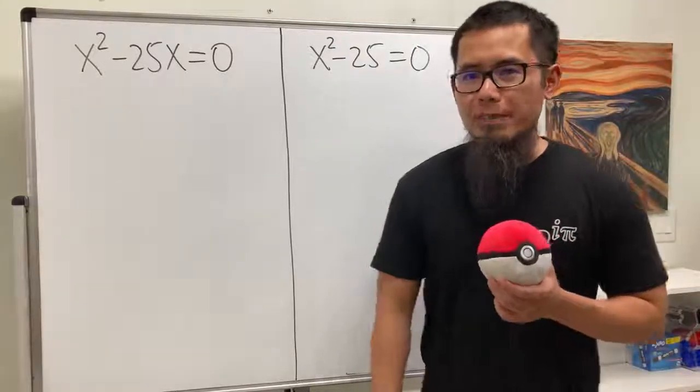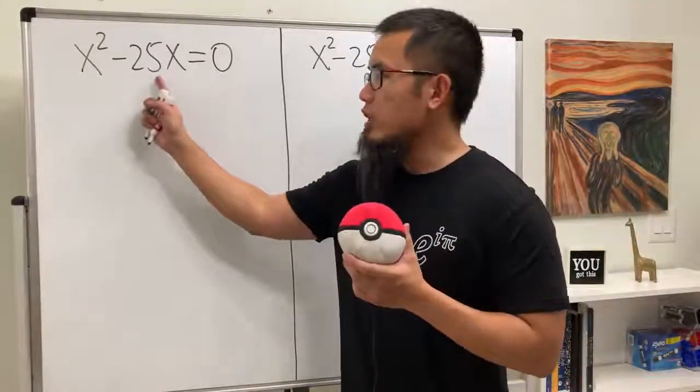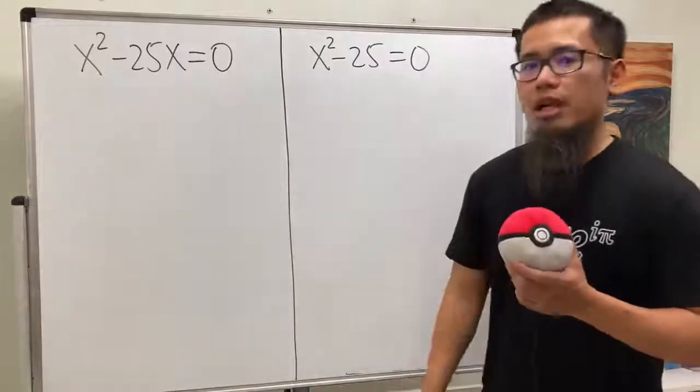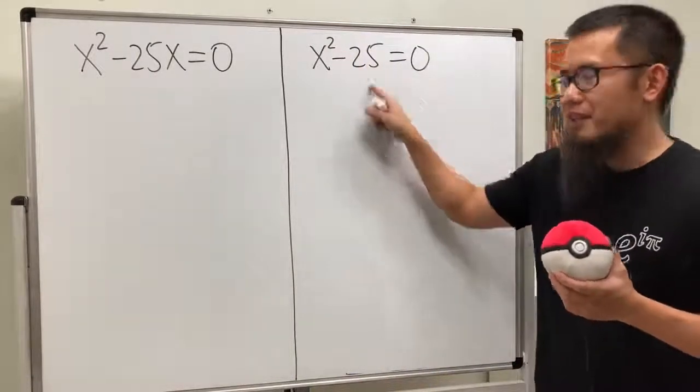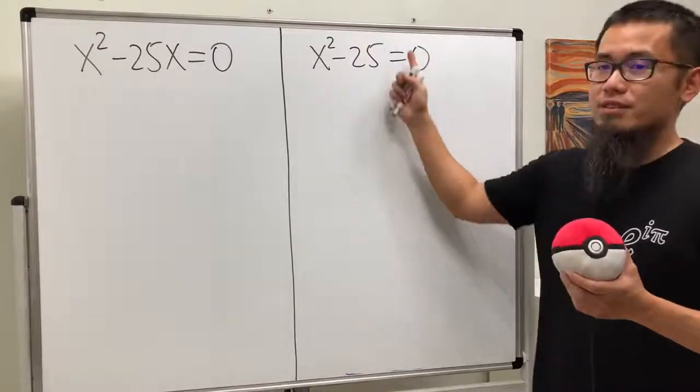Okay, we have two quadratic equations on the board. The first one is x squared minus 25x, and that's equal to 0. And for the second one, we only have x squared minus 25, and that's equal to 0. So there's no x.